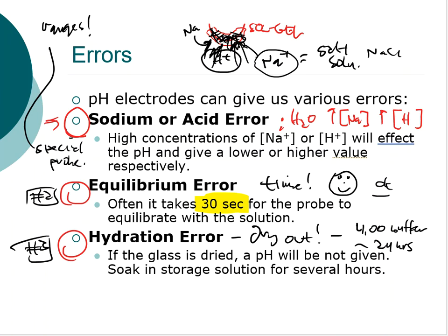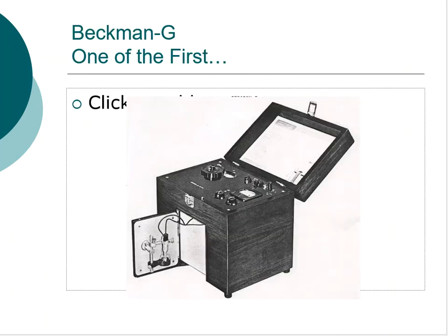Now that we've covered the probe errors, let's look at one of the first pH meters on the market. This is the Beckman G, dating back to the 1930s — a clunky wooden box that looks nothing like the pH meters we use today. Interestingly, that wooden box is probably still intact and solid today, and these instruments are likely worth quite a bit of money.